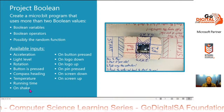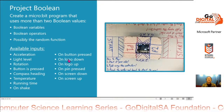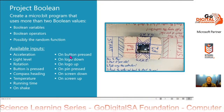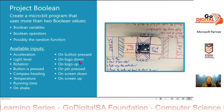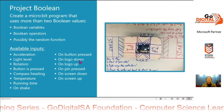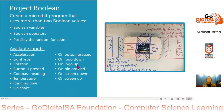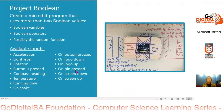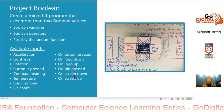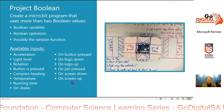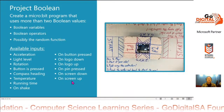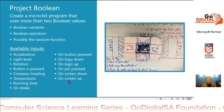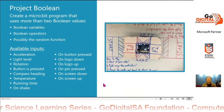On shake is Boolean, true or false. On button pressed is Boolean, true or false. Logo down is Boolean, logo up is Boolean, pin pressed is Boolean, screen down and screen up — on each of those cases, it's either true or false.